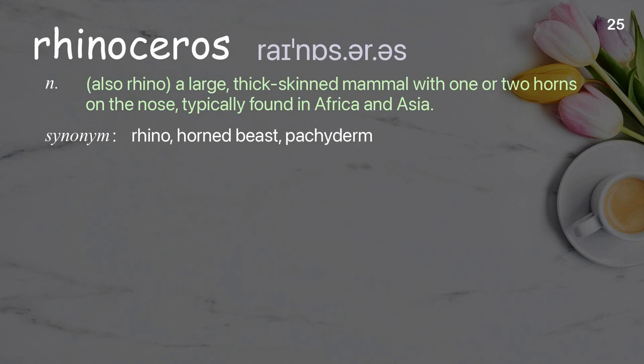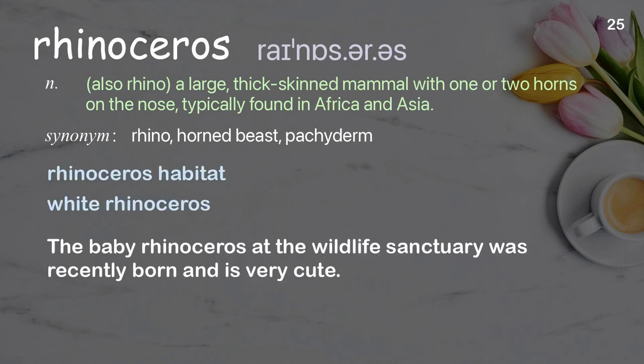Rhinoceros (also rhino): a large, thick-skinned mammal with one or two horns on the nose, typically found in Africa and Asia. Examples: rhinoceros habitat, white rhinoceros. The baby rhinoceros at the wildlife sanctuary was recently born and is very cute.